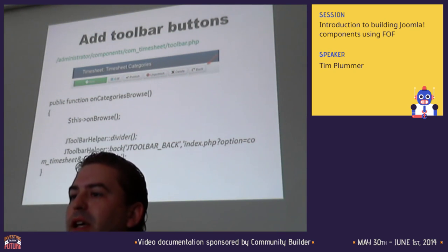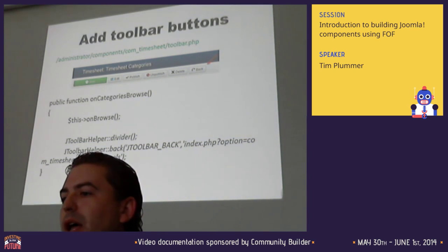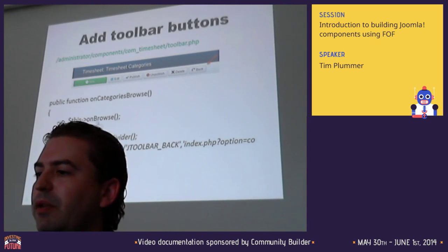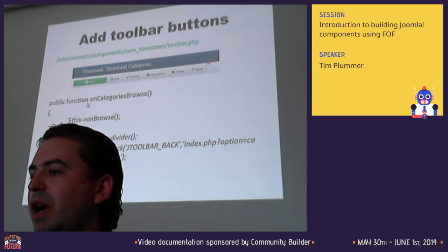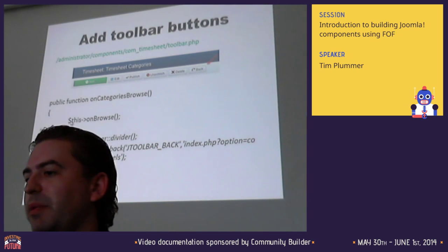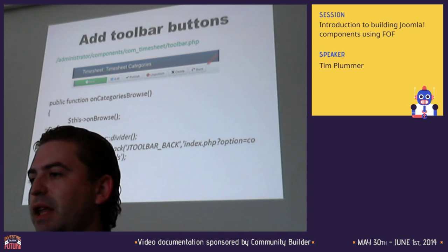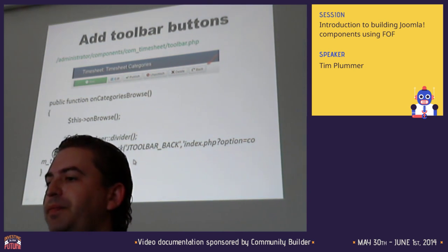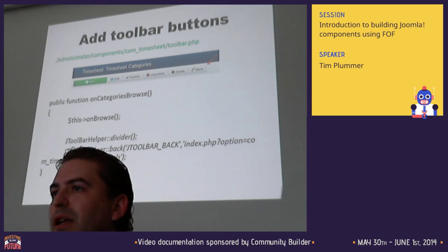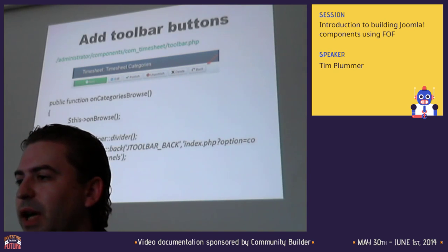Toolbar buttons are handled in a file called toolbar.php in the back end. For each of the different views and methods - whether it's browse, edit, or whatever - you create a function to add extra buttons. In this case we're loading the standard onBrowse buttons and adding a back button as well. This same toolbar.php file is used for the front end toolbar, but with an extra line needed if you're targeting a front end view.